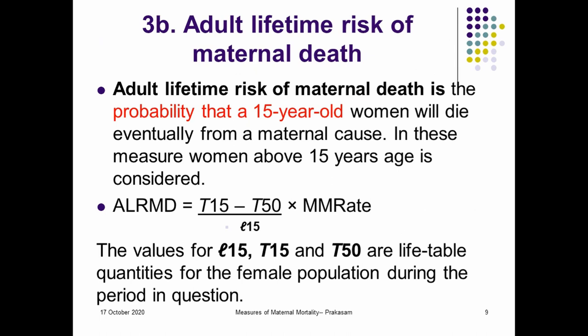The adult lifetime risk of maternal deaths is the probability that a 15-year-old woman will eventually die from a maternal cause in a given time period. Women above 15 years of age are considered because, according to the Indian system, early marriages occur and there is risk of maternal deaths below 15 years also. The end period is taken as 50 years of age, not 45. Therefore, the proportional maternal deaths is calculated as (T15 minus T50) divided by L15, multiplied by the maternal mortality rate.